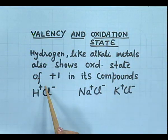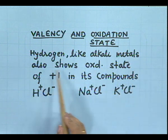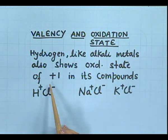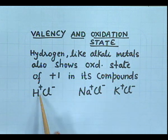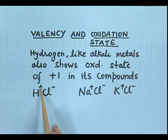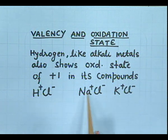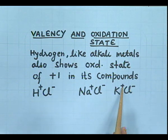Valency and oxidation state: hydrogen, like alkali metals, also shows an oxidation state of plus 1 in its compounds. For example, in HCl (hydrogen chloride), H is in the plus 1 state. Similarly, alkali metals like sodium and potassium are both in the plus 1 state.